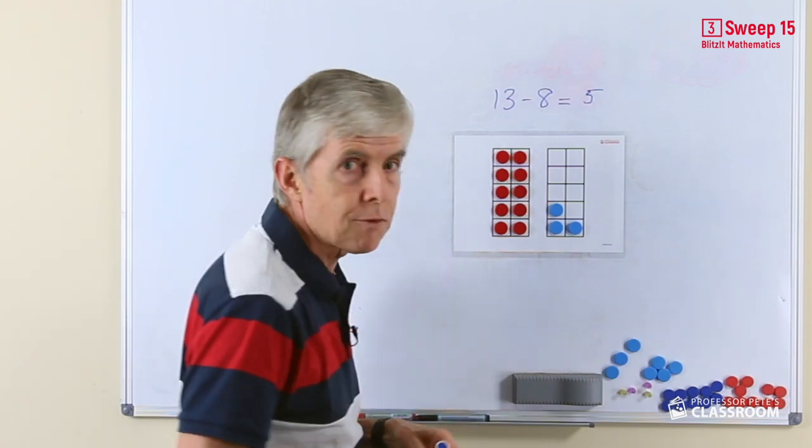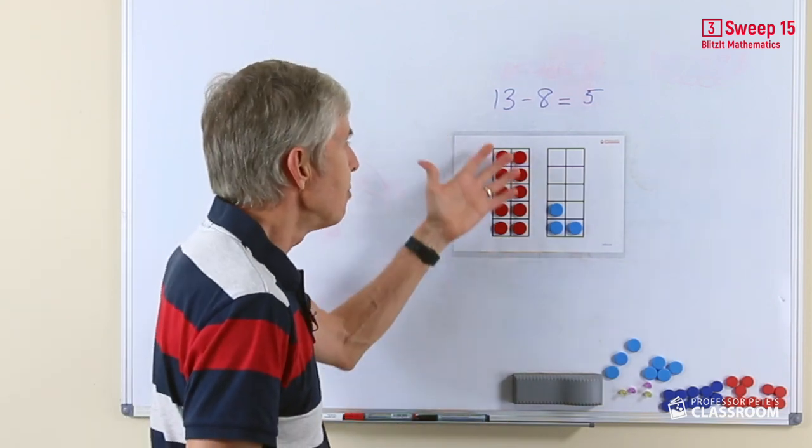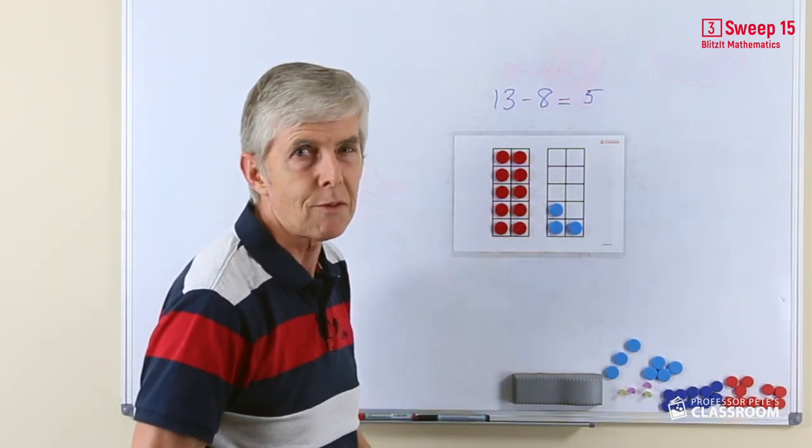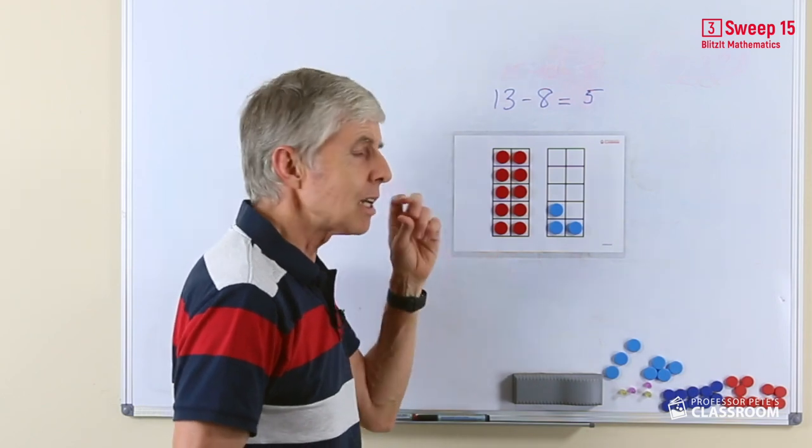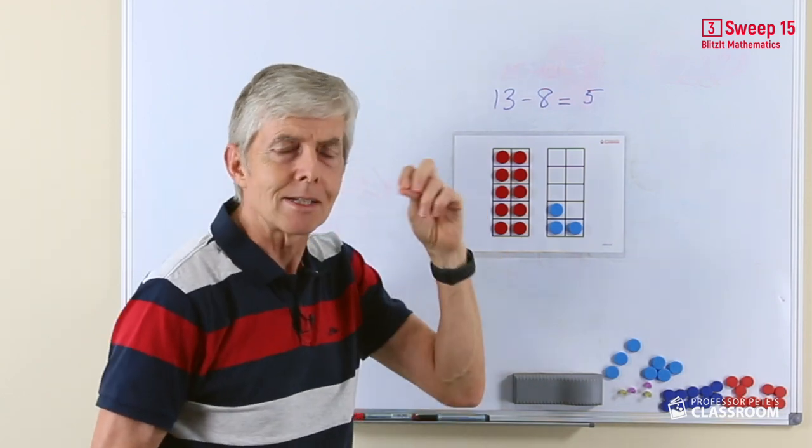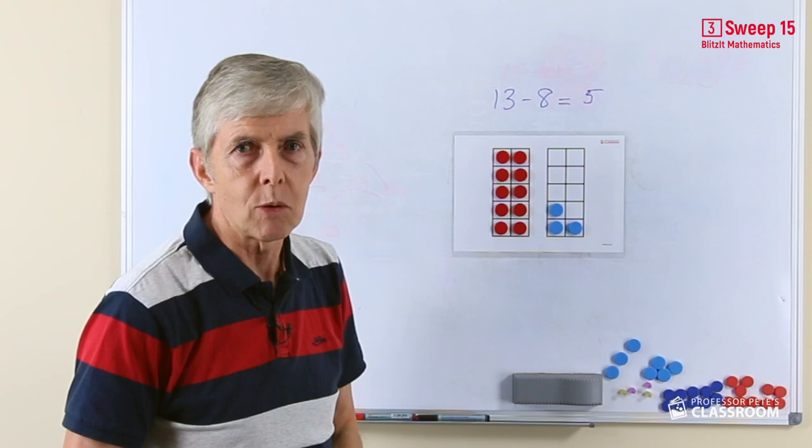We can do the turnaround fact as well, 13 take away 5. There's 13. If we were to take away 5, what would we get? It's a little harder to think about that as a near-10 take away 8 fact.